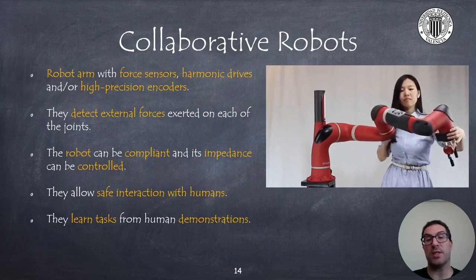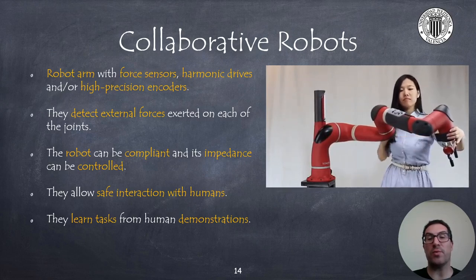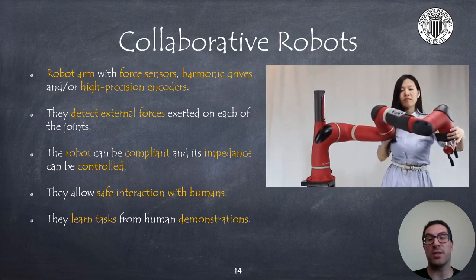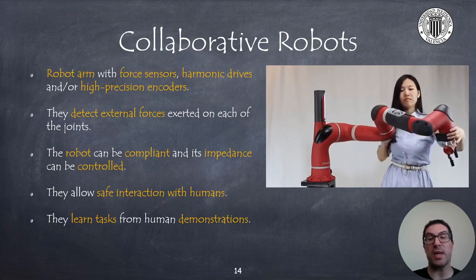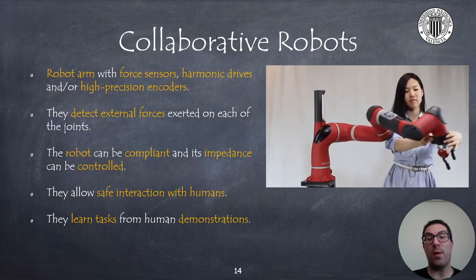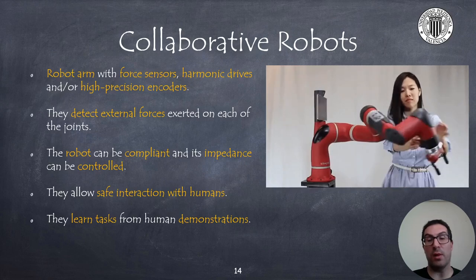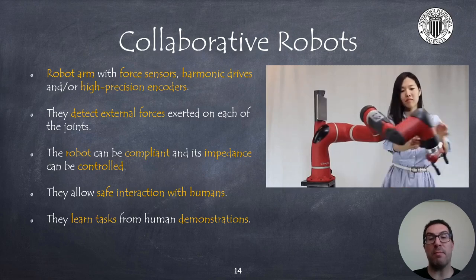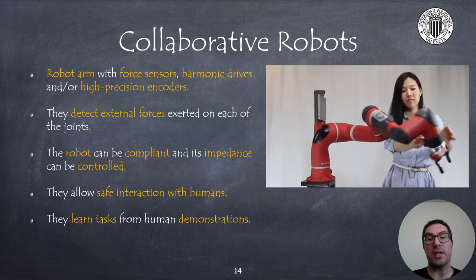Collaborative robots are just like any other robotic arm but they usually include force and torque sensors as well as harmonic drives and high precision encoders that allow detecting external forces exerted on each of the joints. This means that the robot can be compliant, allowing it to yield in the effort to accomplish a given task, which allows us to interact with them, since they are known as safe robots. The impedance of the robot end effector can be controlled, meaning that in some directions the robot may be stiff, or in other directions very compliant. One of the main advantages is that they can be used to learn tasks from human demonstrations.